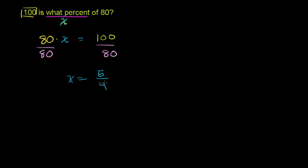So in simplest form, x is equal to 5 fourths, but I've only expressed it as a fraction. But they want to know what percent of 80. If they just said 100 is what fraction of 80, we would be done. We could say 100 is 5 fourths of 80, and we would be absolutely correct. But they want to say what percent, so we have to convert this to a percent.